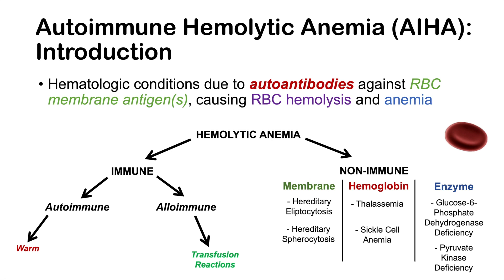There are three conditions in general to discuss: warm autoimmune hemolytic anemia, cold autoimmune hemolytic anemia, and paroxysmal cold hemoglobinuria.